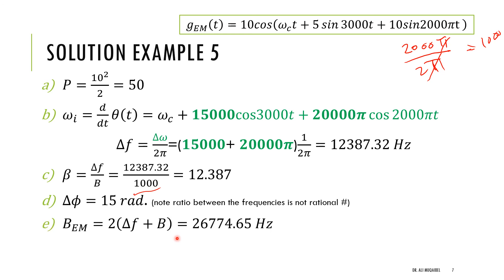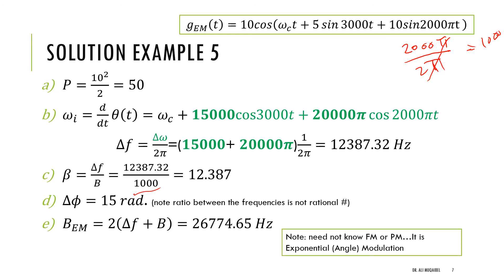For bandwidth estimation of this angle-modulated signal, applying Carson's rule: B_T = 2×(delta_f + B) = 2×(12,387 + 1,000) ≈ 26,000 Hz. We did not need to know whether this was FM or PM — it is simply an angle-modulated (exponential modulation) signal.